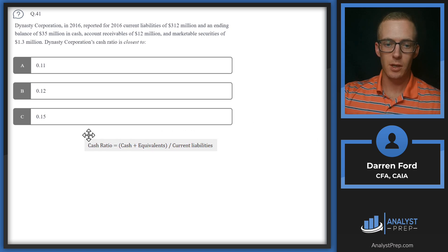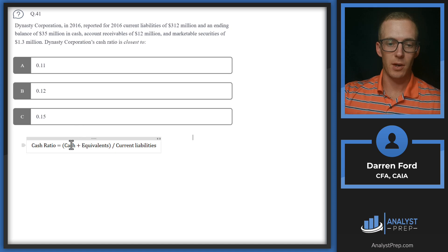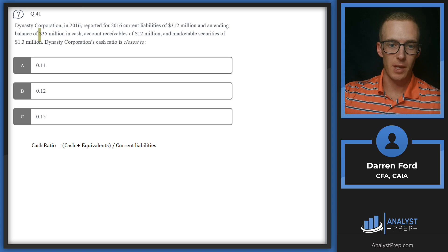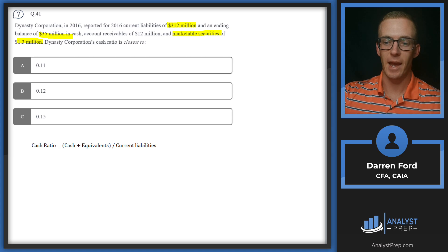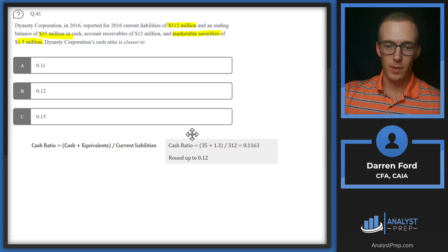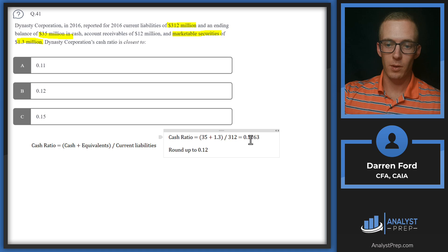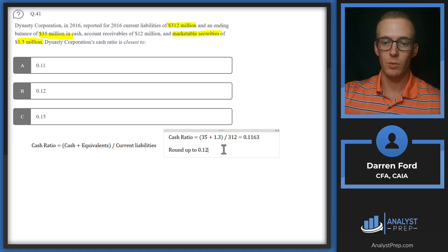The cash ratio is going to be cash plus cash equivalents over current liabilities. We take the 35 million and add 1.3 million of marketable securities — those are probably treasury bonds or something very liquid that's cash-like — then divide by 312 million. That gives us 0.1163, which rounds up to 0.12.